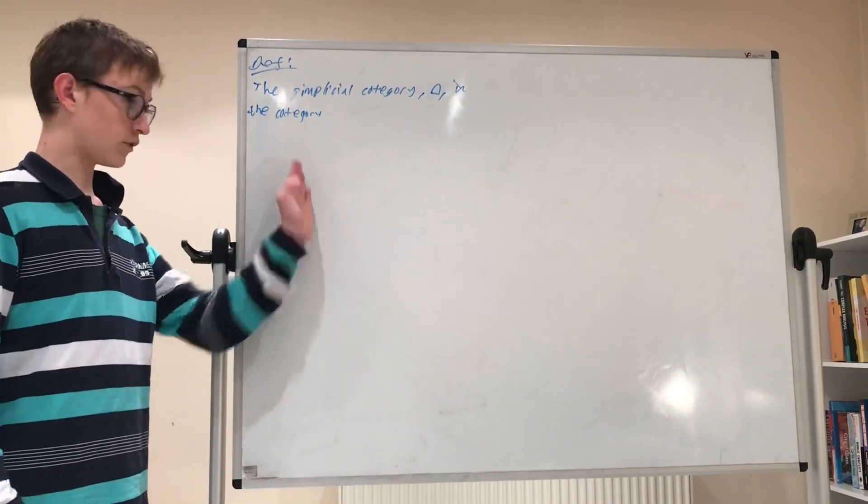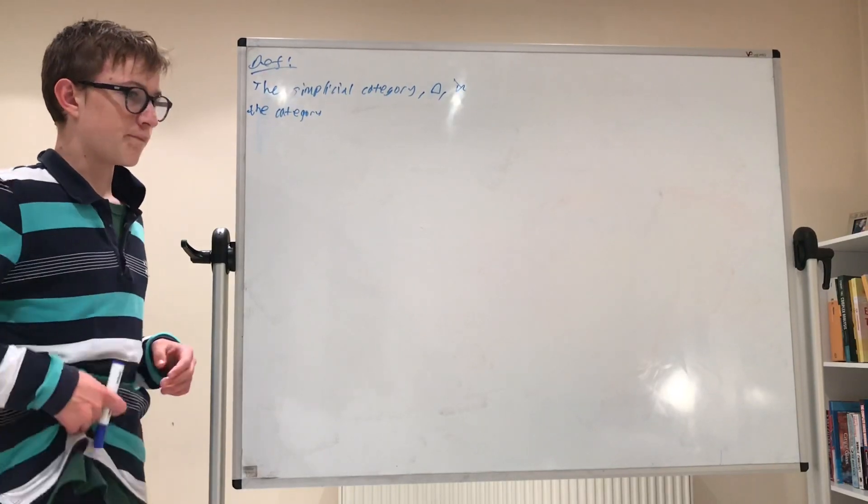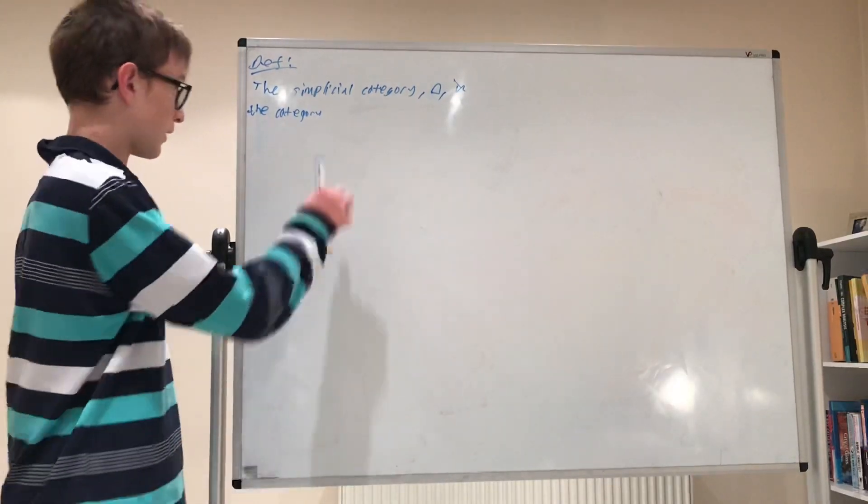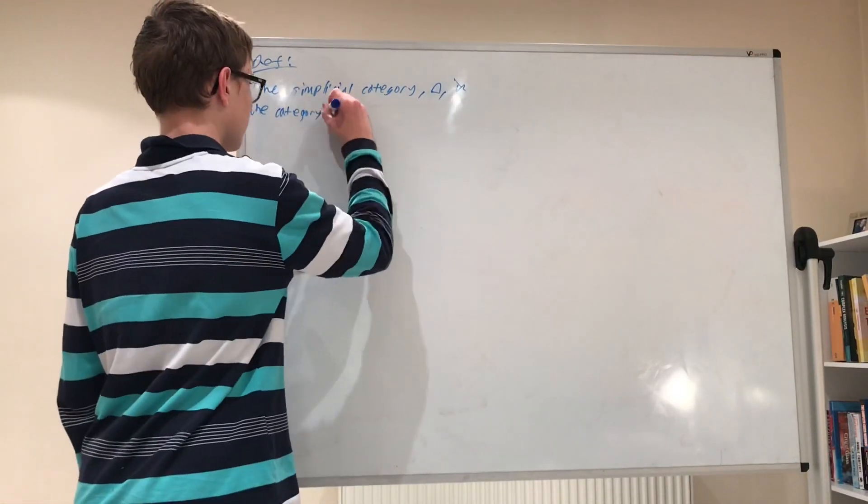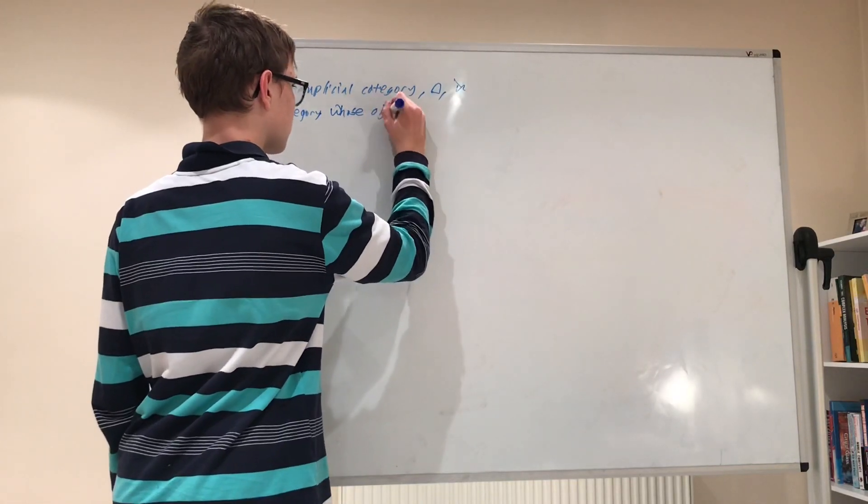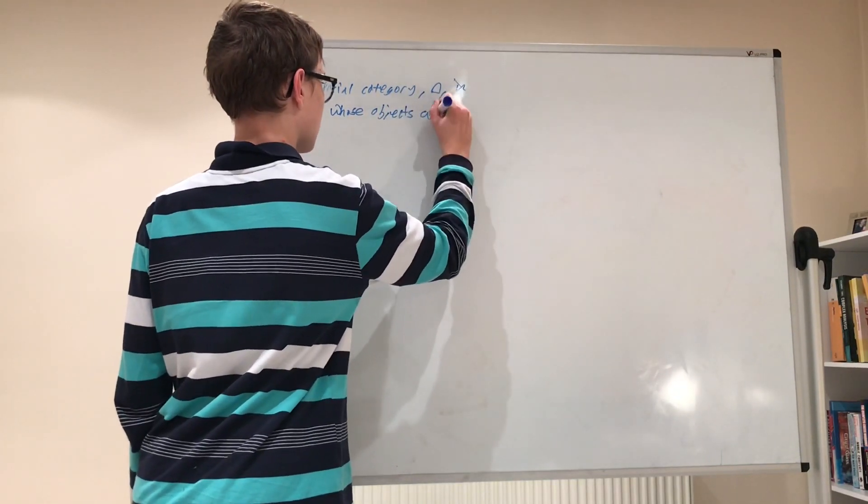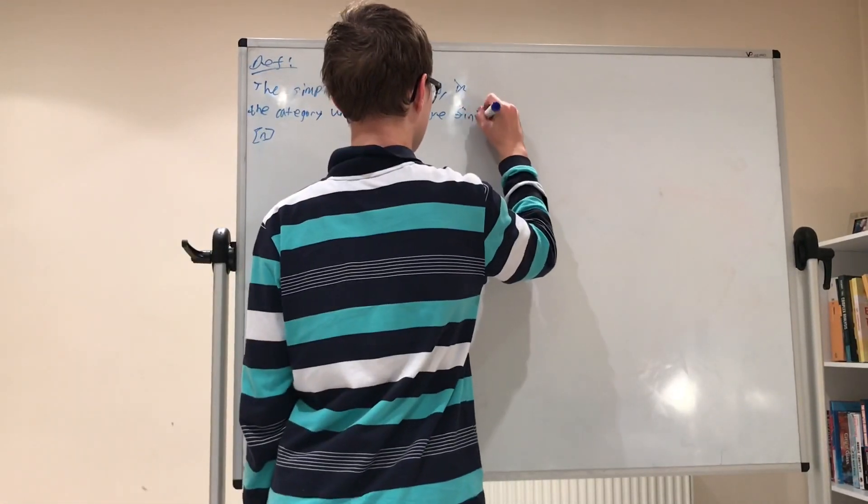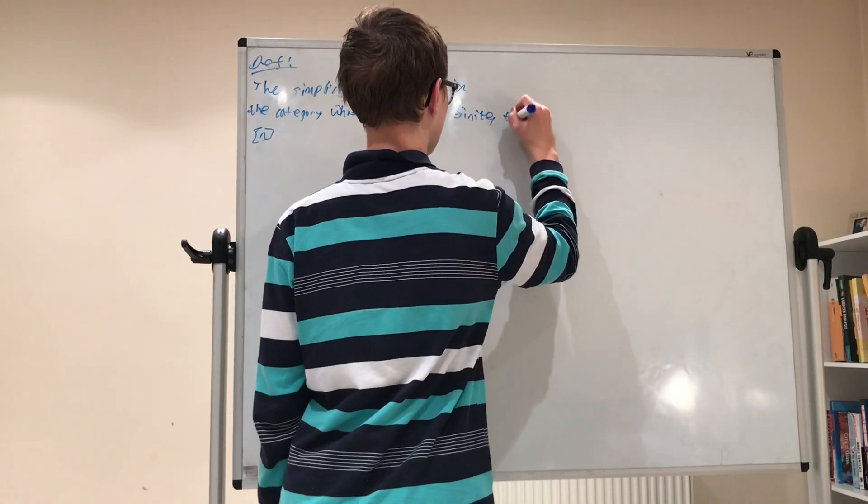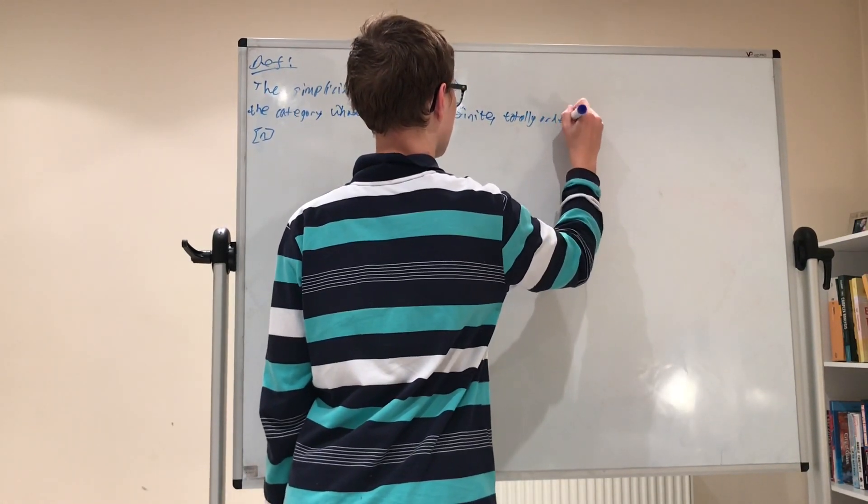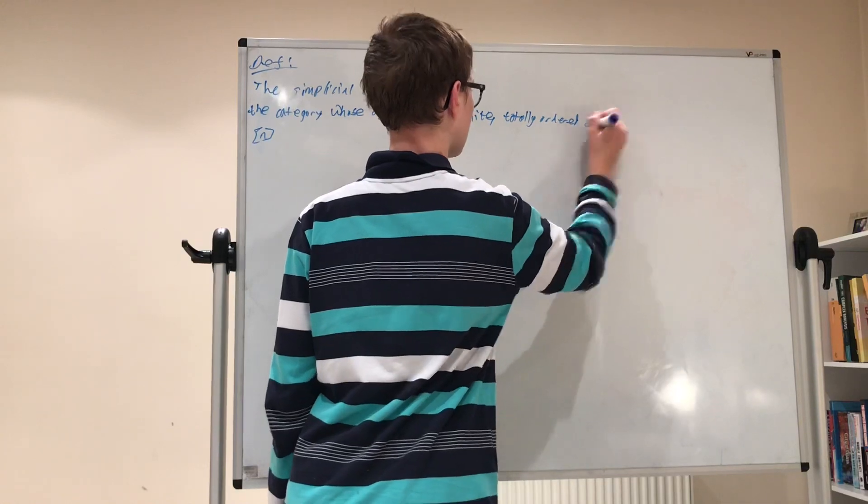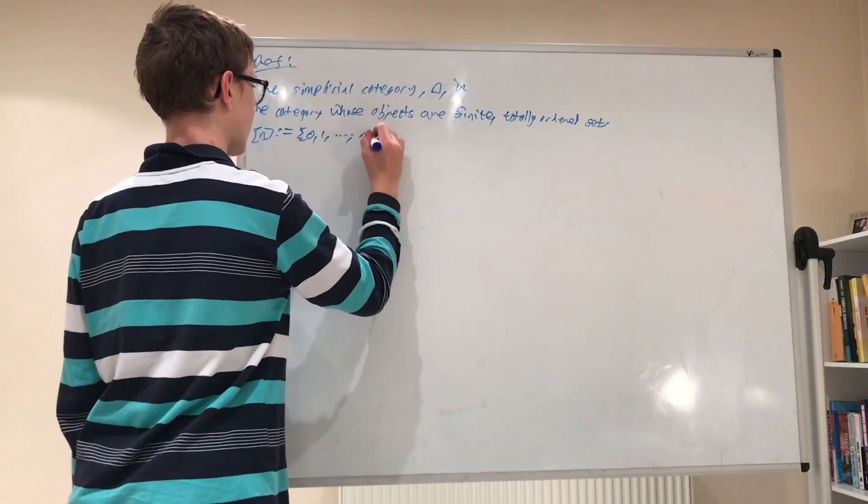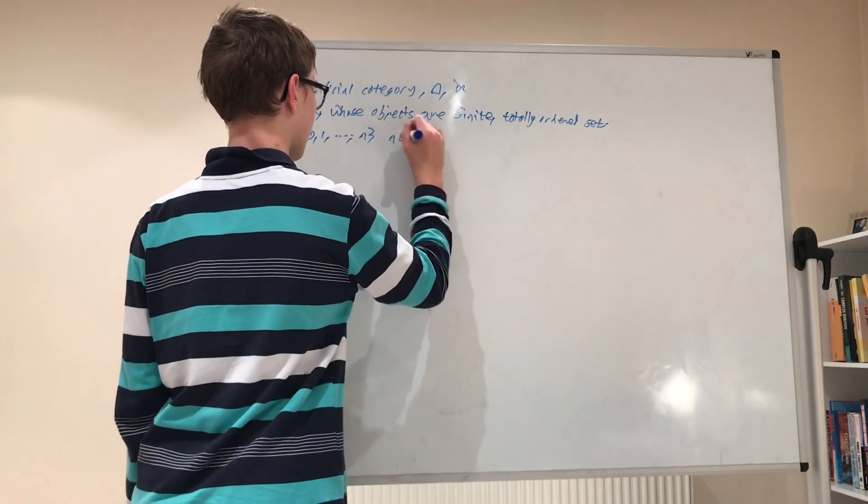So whose objects are finite, totally ordered sets n equal to 0, 1 up until n, for a natural number n.